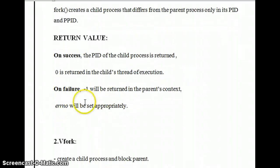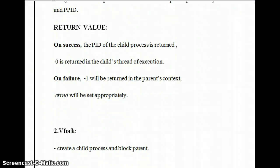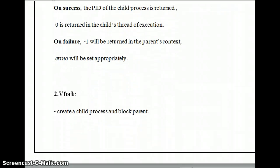On success, if the child process is created, the process ID of the child process written in the child thread of execution is 0. On failure, -1 will be returned in the parent context and errno will be set to the appropriate value.